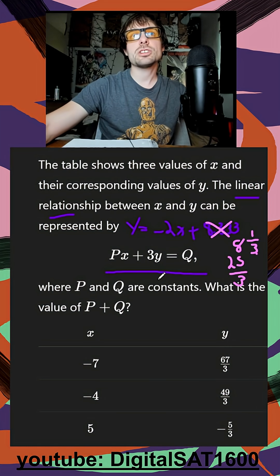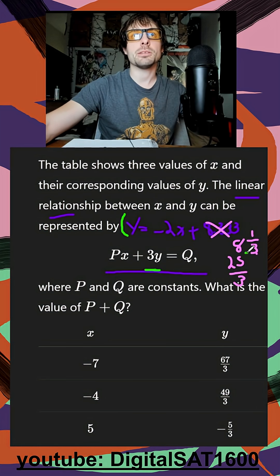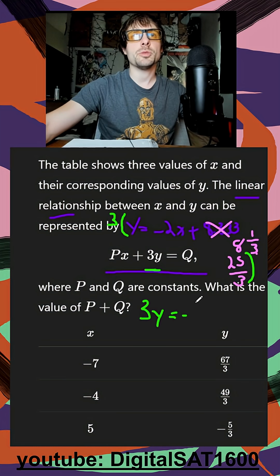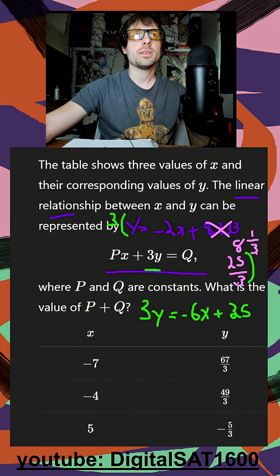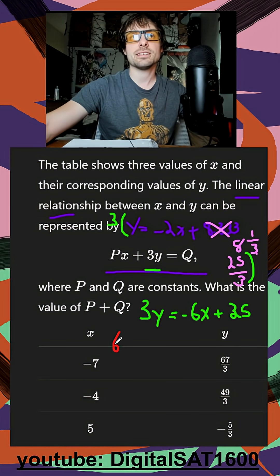What they actually want our final equation to be is they want a 3 in front of y. There's an easy way to do that — I'm just going to multiply everything by 3. So down below I should get 3y is equal to negative 6x. And then plus 25, which gets rid of my denominator. Then all I need to do is change my format — they want the x and the y on the left side. So I add 6x to both sides.